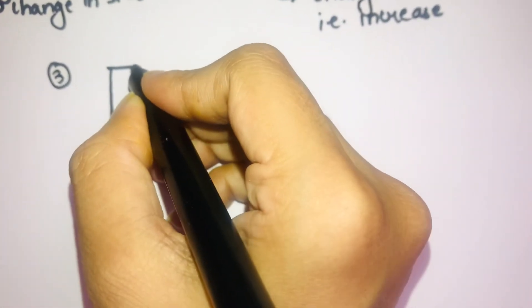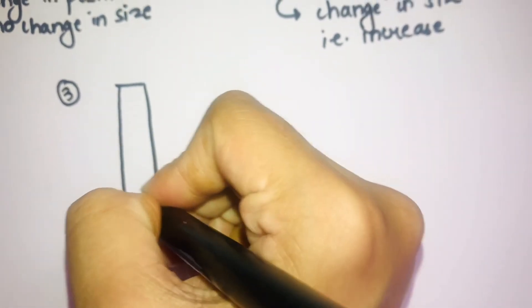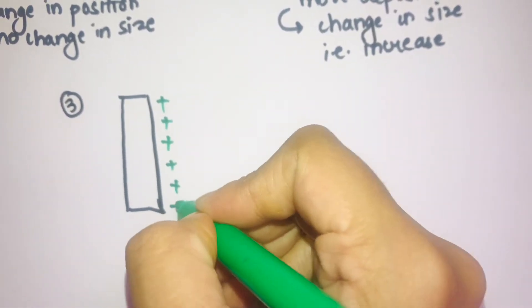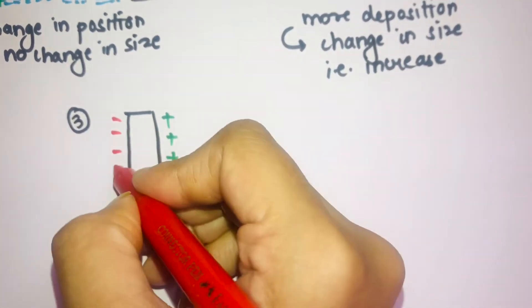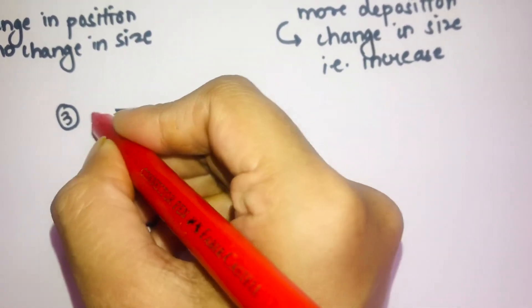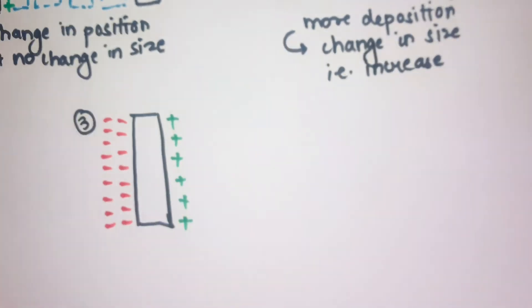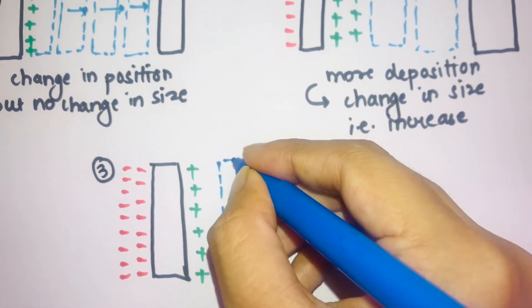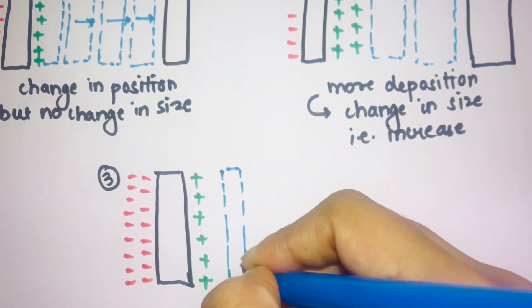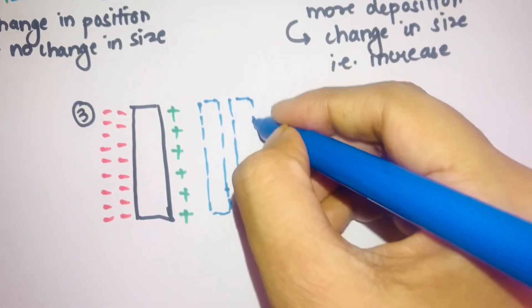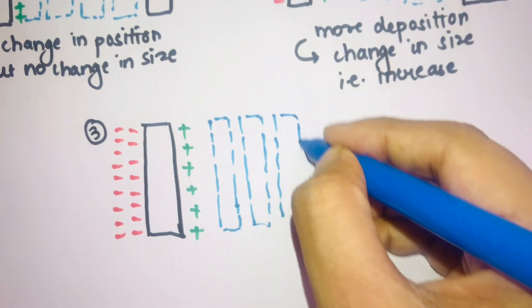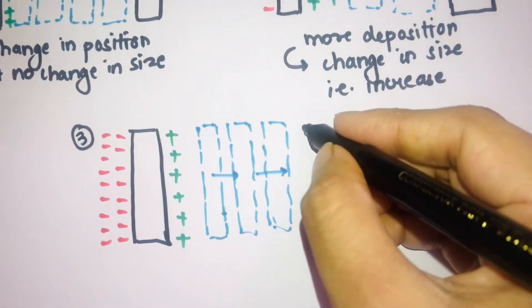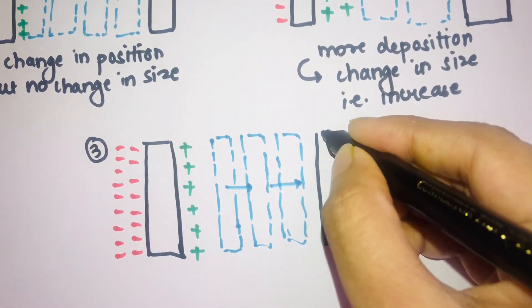The third scenario: there is deposition on the left side but only one column, meaning less deposition, and there is more resorption. The bone changes its position, and in the new position the bone is thinner because there is more resorption and less deposition. So it has moved to a newer position but its thickness has decreased.